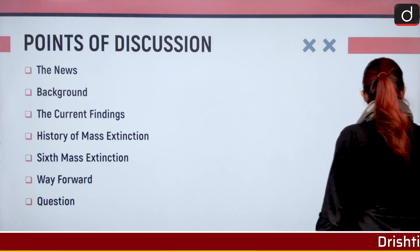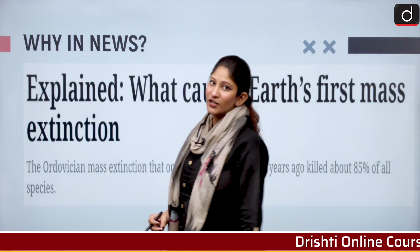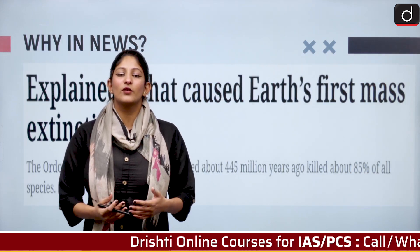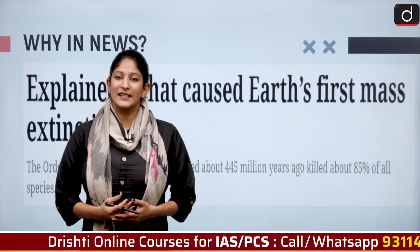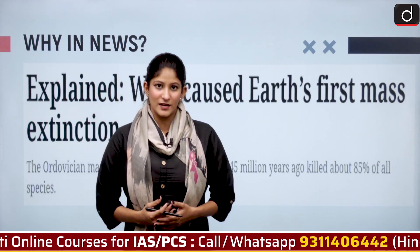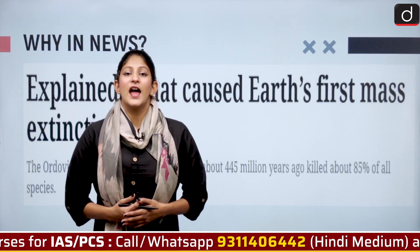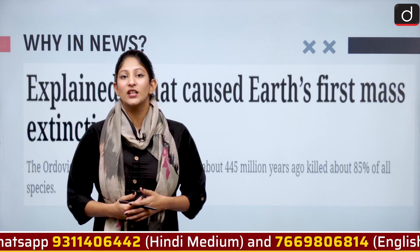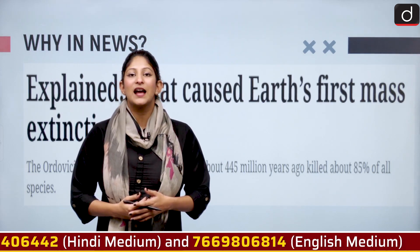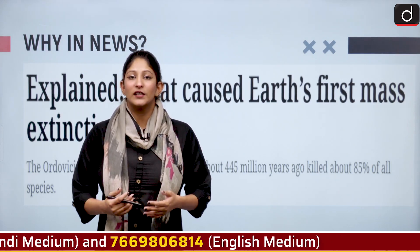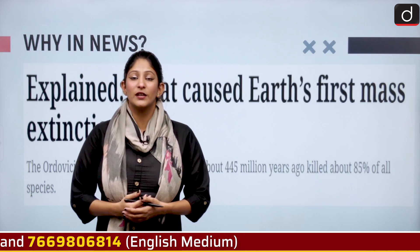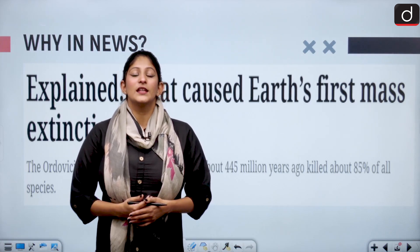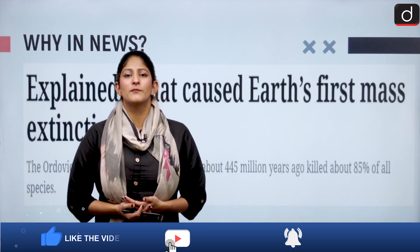The topic of mass extinction is in the news because a study published in a journal has cited one of the key reasons for the mass extinction in the late Ordovician period. This mass extinction has been attributed to the factor that because of excessive cooling, there has been a change in the pattern of oceanic currents, which led to the extinction of many species. We are referring to the first mass extinction, which caused a huge depletion of species no longer present with us.